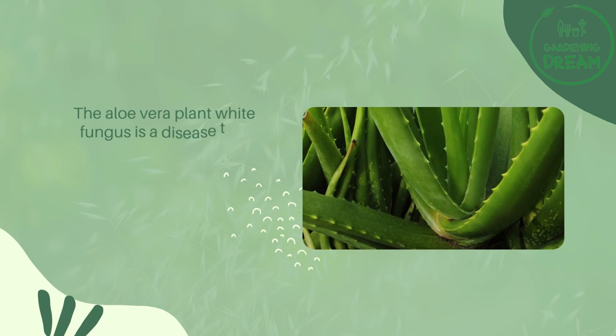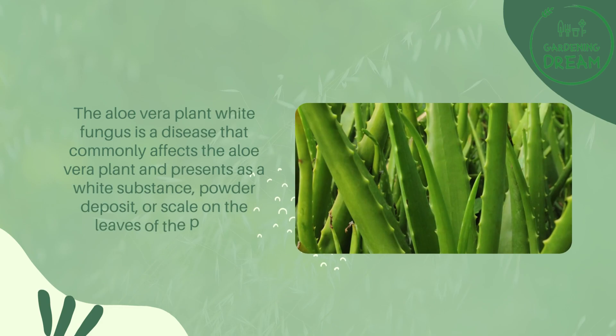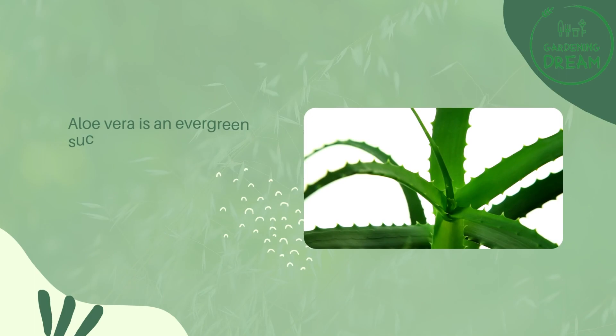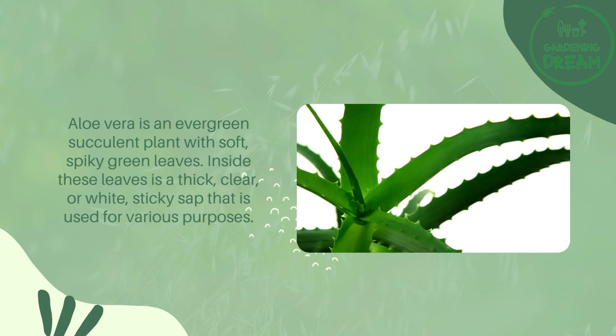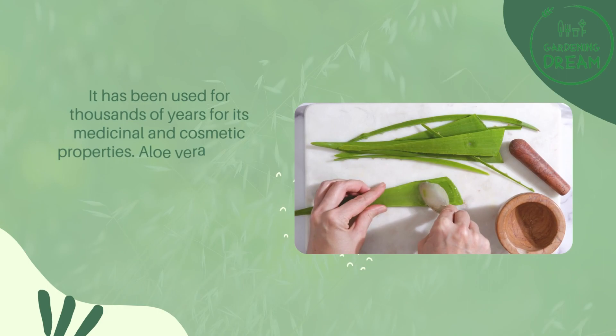The aloe vera plant white fungus is a disease that commonly affects the aloe vera plant and presents as a white substance, powder deposit, or scale on the leaves of the plant. Aloe vera is an evergreen succulent plant with soft spiky green leaves. Inside these leaves is a thick clear or white sticky sap that is used for various purposes. It has been used for thousands of years for its medicinal and cosmetic properties.